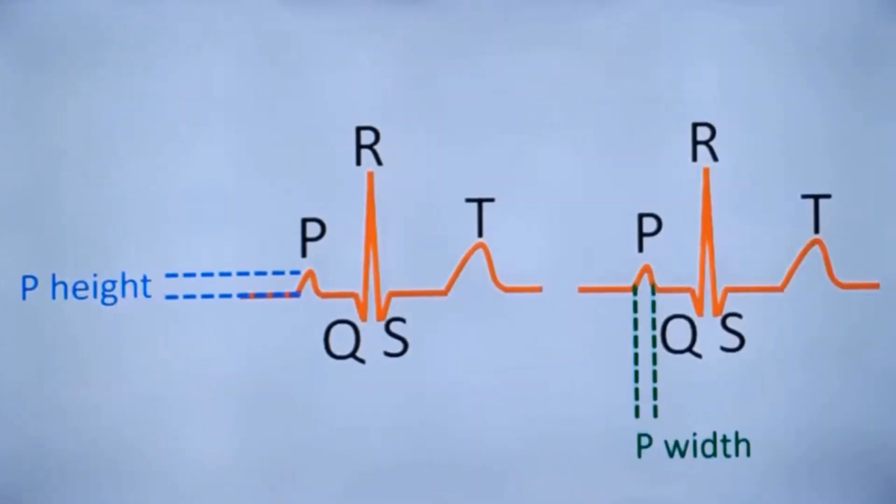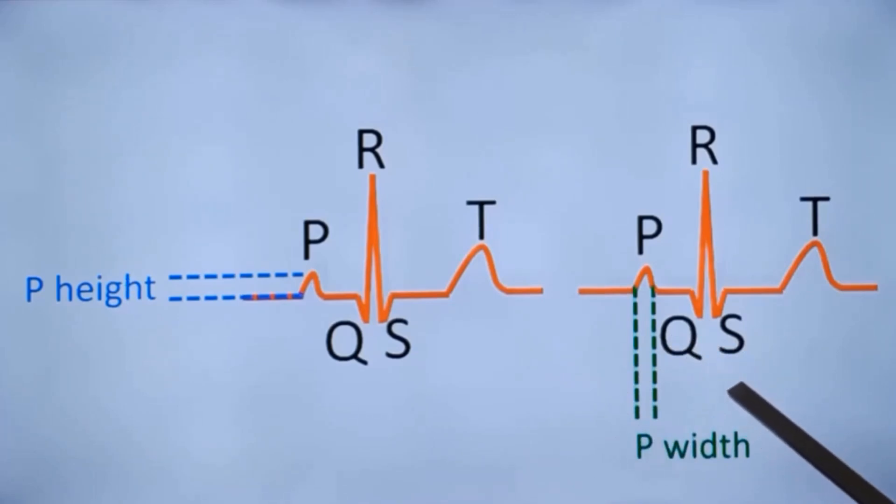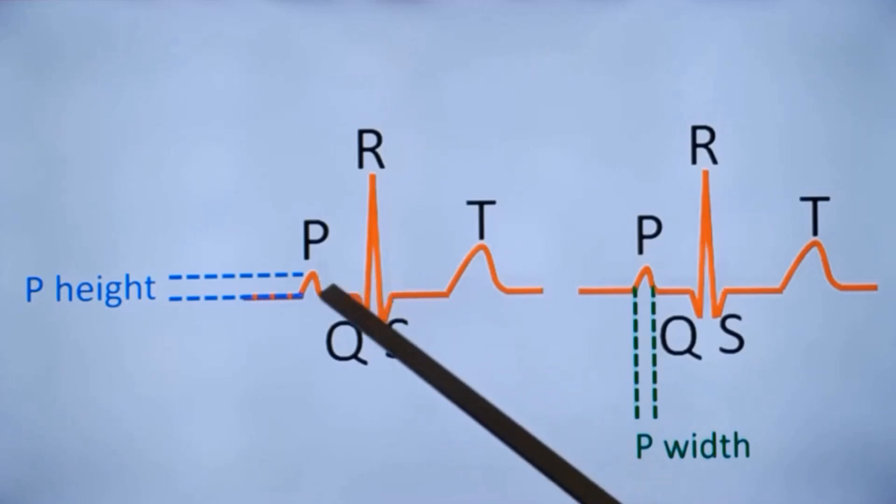Normal P wave dimensions are easy to remember. Both the height of P wave or amplitude of P wave and width of P wave are 2.5 mm in a standard ECG, meaning that an ECG recorded at a paper speed of 25 mm per second. The P width of 2.5 mm will correspond to 100 ms when you express as time. And if it is more than that, you can say that P is widened and it occurs in left atrial enlargement. Height of the P wave more than 2.5 mm occurs in right atrial enlargement. If both height and width are increased, it is biatrial enlargement.